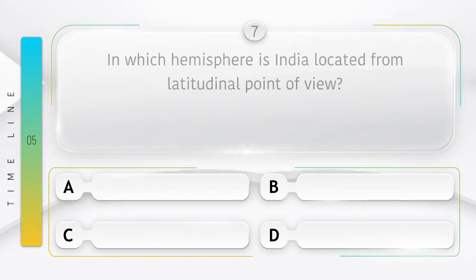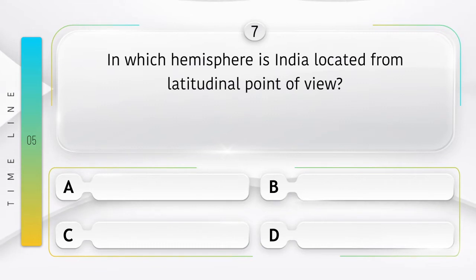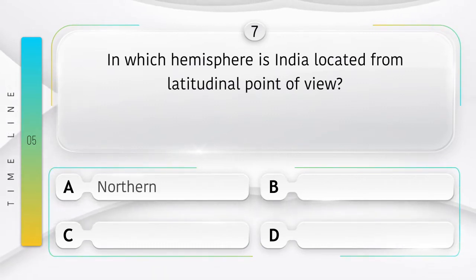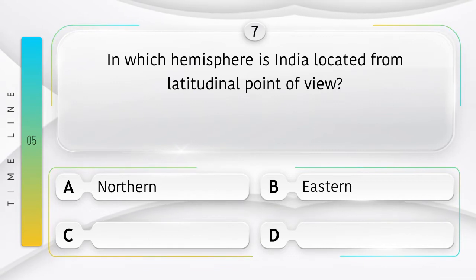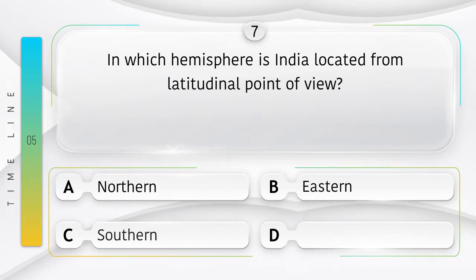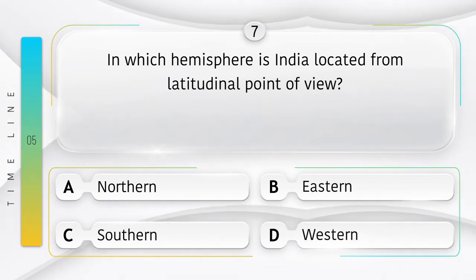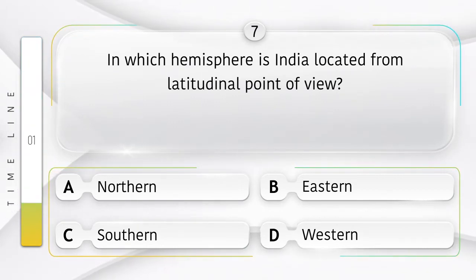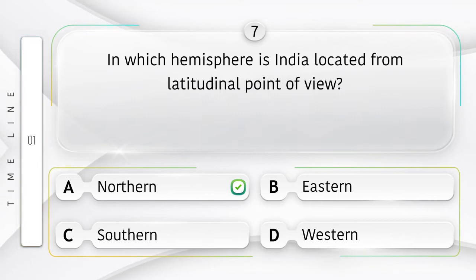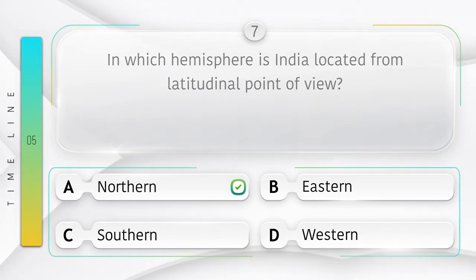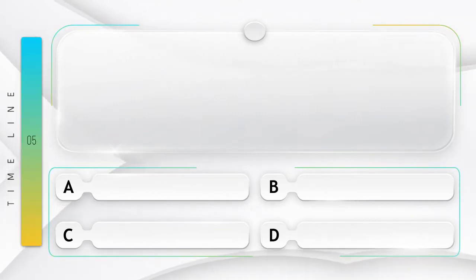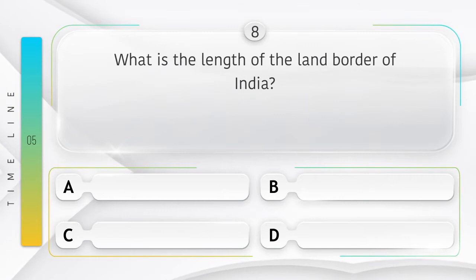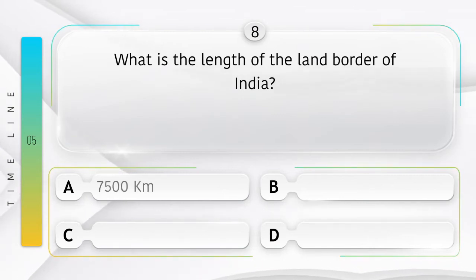In which hemisphere is India located from a latitudinal point of view? Option A: Northern, B: Eastern, C: Southern, D: Western. Answer is option A: Northern.